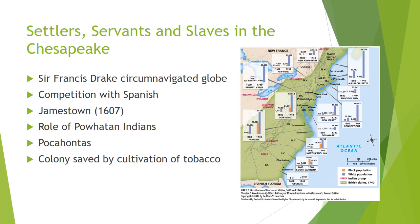After Drake passed from the scene, the English established their first permanent colony in Jamestown in 1607, founded by the Virginia Company, a joint stock company chartered by James I. Jamestown was a colony that really held on by the skin of its fingernails — at one point it was down to only 60 residents as people were starving. The first colonists were mostly gentlemen and soldiers who depended on the Powhatan Indians to survive.